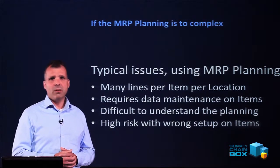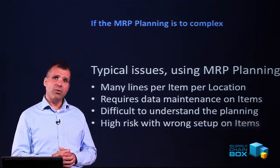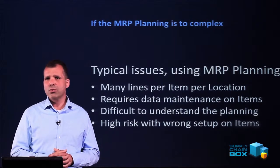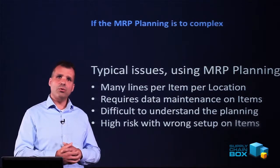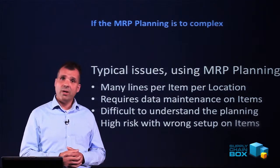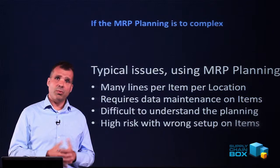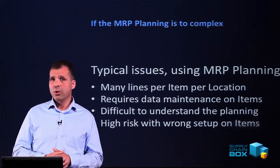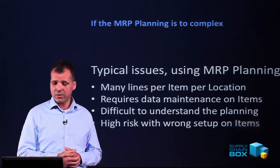We also often meet the problem that it's difficult to understand the planning. The planning batch job is very complicated, and when it creates cancellations and new orders, it's difficult for users to understand what is actually happening. It requires data maintenance on items, meaning you have to set up a lot of fields on the item card to run a full MRP, which can be complicated to maintain if you have many items. There is also a high risk of setting up items wrong — if you don't fill in the replenishment system or the reorder system on the item card, nothing will happen in the MRP batch job and you just forget the item.